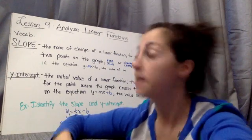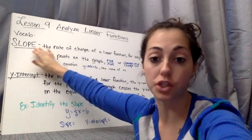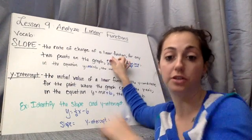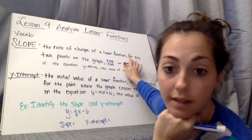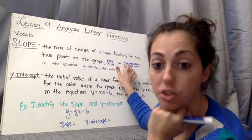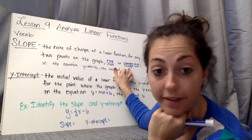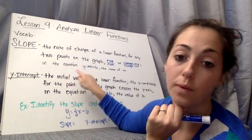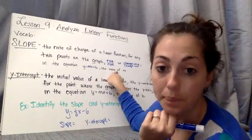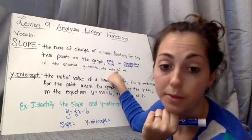Some vocabulary we need to know is the slope, which has three different definitions. The first is the rate of change of a linear function. And then for any two points on a graph, the rise over run or change in y over change in x. And lastly, in the equation y equals mx plus b, the value of m.